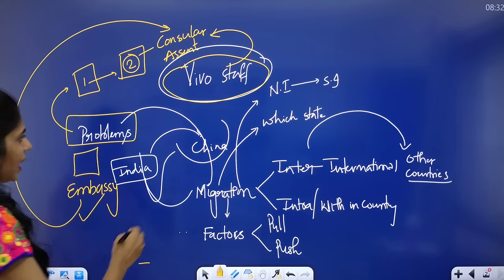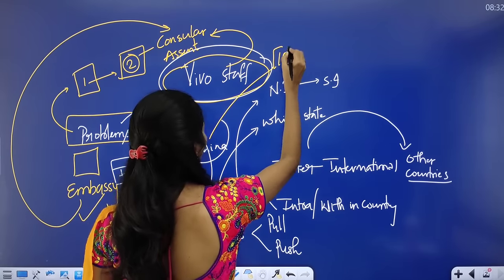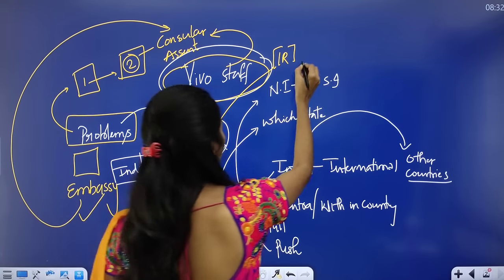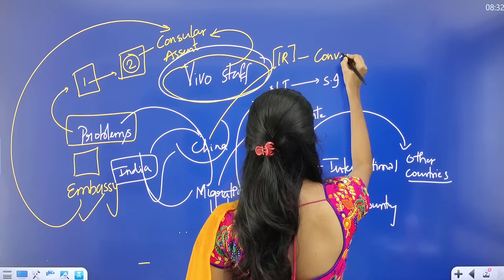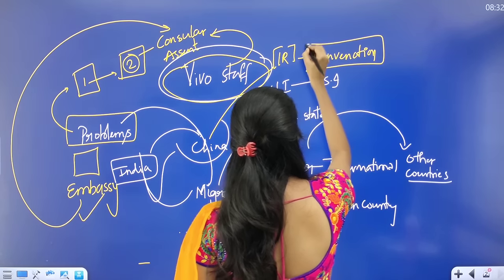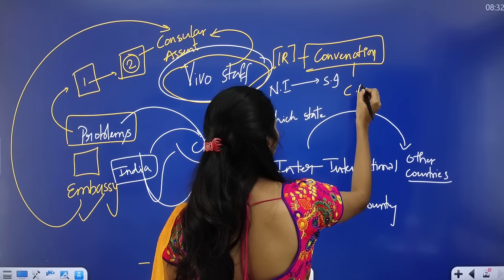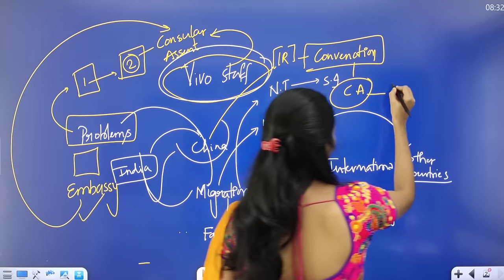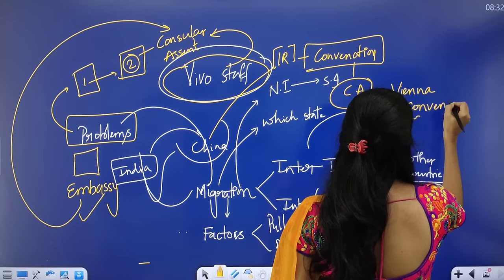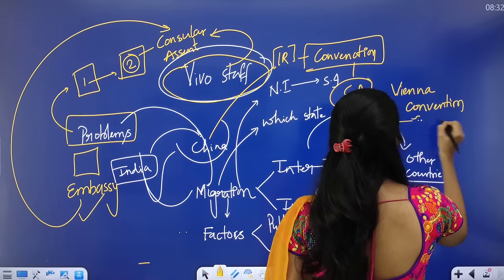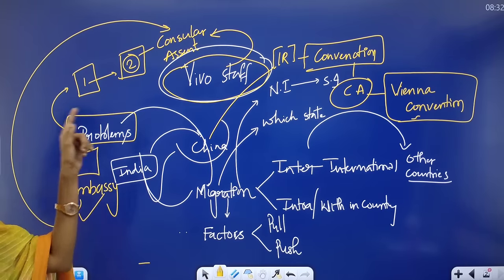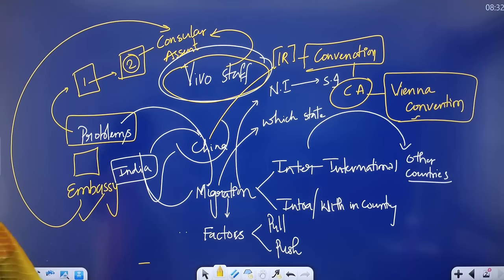You can also connect this topic with international relations and identify which countries have the largest Indian migrant communities. Importantly, the convention that governs consular aid or consular access is the Vienna Convention. You must know the key facts regarding the Vienna Convention — this is very important for the exam.